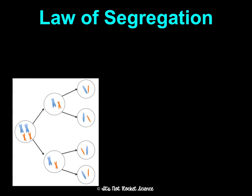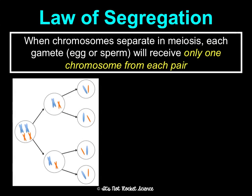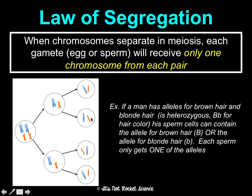The law of segregation says that when chromosomes separate in meiosis, each gamete — egg or sperm — only receives one chromosome from each pair. After meiosis I the pairs separate, and after meiosis II the sister chromatids separate, so each gamete has only one from each pair. For example, if a man is heterozygous (Bb), half his sperm carry big B for brown hair and half carry little b for blonde hair. Each sperm gets only one allele for this trait; the other allele comes from the mother.